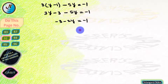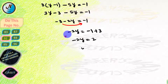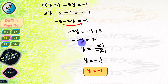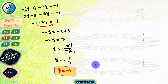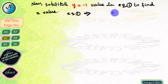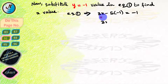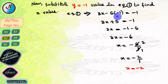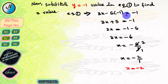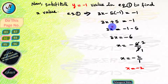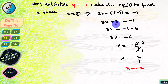Transposing minus 3 to the RHS, we get minus 2y equals minus 1 plus 3, which simplifies to minus 2y equals 2, so y equals minus 1. Next, we substitute y equals minus 1 in equation 1 to find x. Equation 1 becomes: 3x minus 5 into (minus 1) equals minus 1.